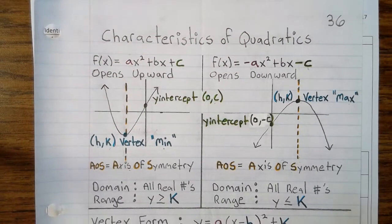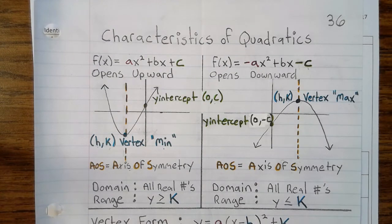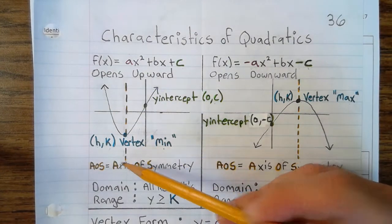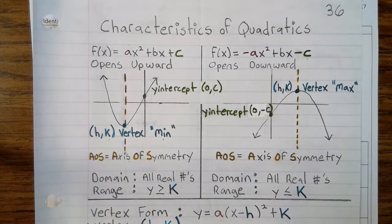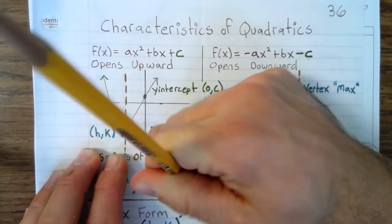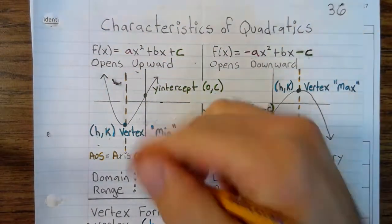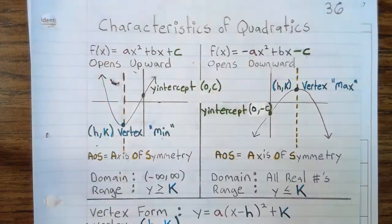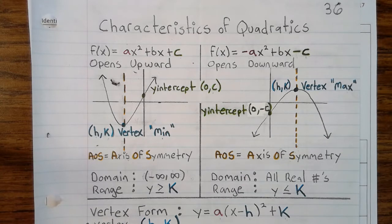Characteristics of quadratics on page 36. Let's start with f(x) = ax² + bx + c. This opens upwards with a vertex that's a minimum, and an axis of symmetry is a vertical line through the vertex. The domain is all real numbers, written as negative infinity to positive infinity. Now, y is greater than or equal to the k value of the vertex.